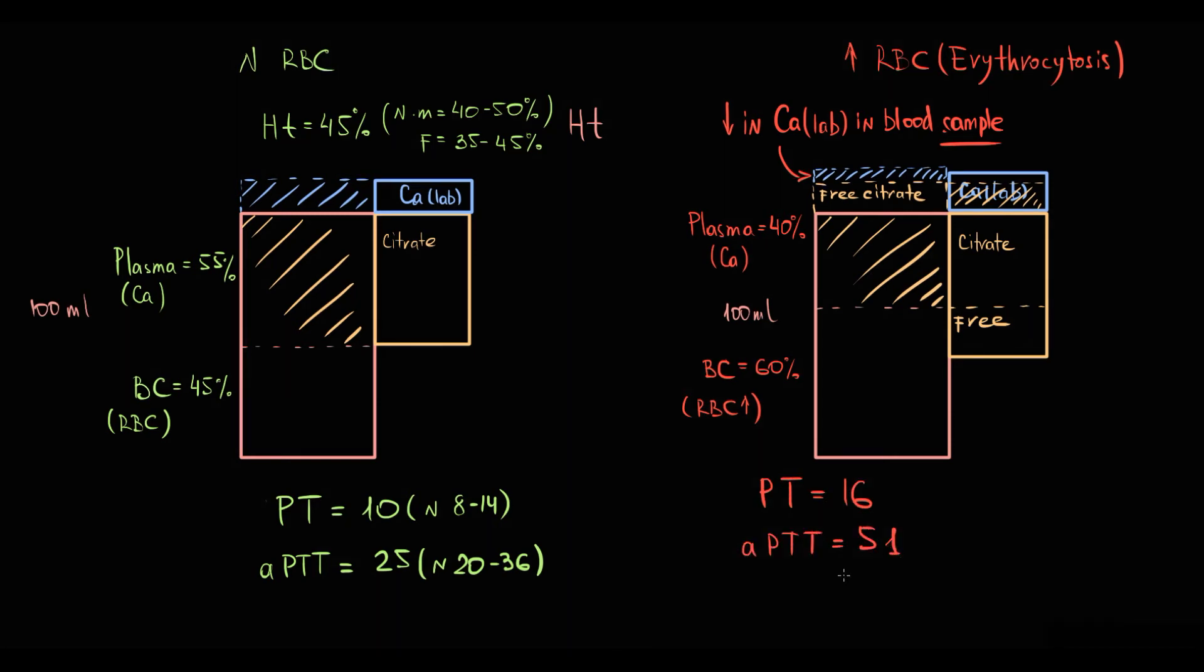Actually we had patients with polycythemia with red blood cells approximately 7.4 who had activated partial thromboplastin time 51. So basically it's not theory, it's real life.